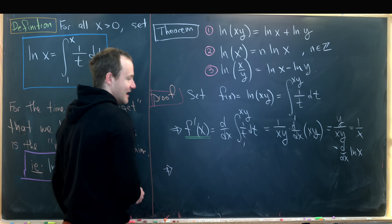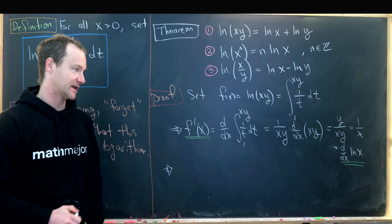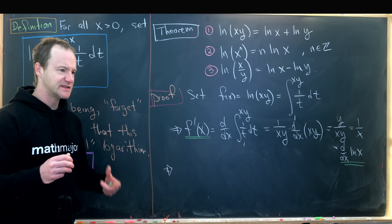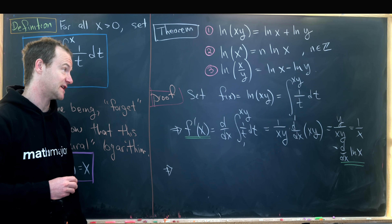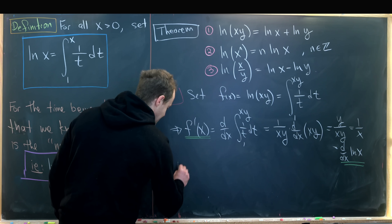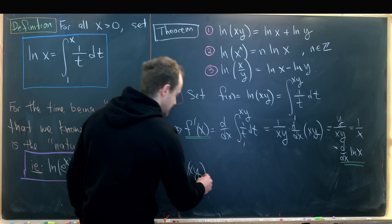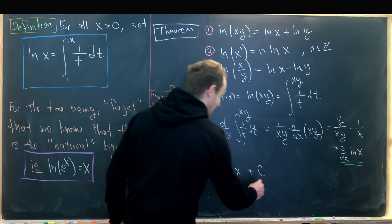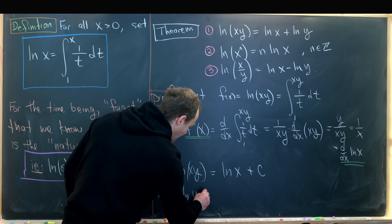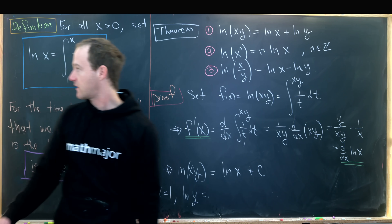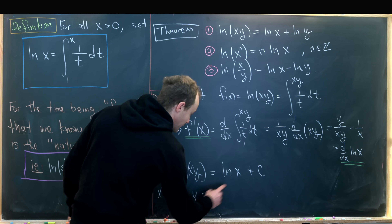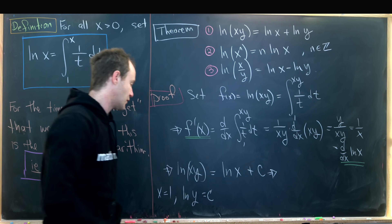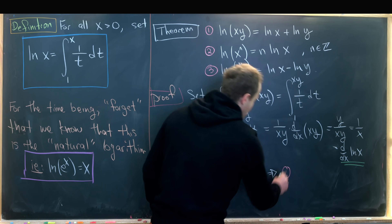Since the derivative of f equals the derivative of ln(x), these two functions must differ by a constant: f(x) = ln(x) + C. To find C, set x = 1. Then ln(y) equals ln(1) — which is 0 because the integral from 1 to 1 is zero — plus C. So C = ln(y). Rewriting, we get ln(xy) = ln(x) + ln(y), which is exactly property number 1.